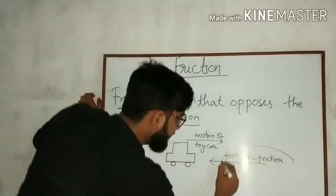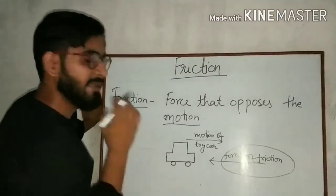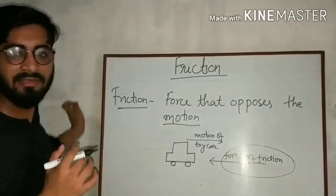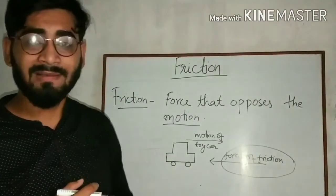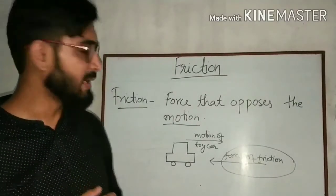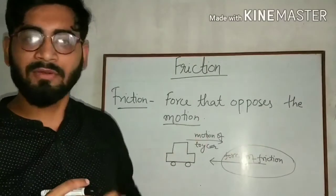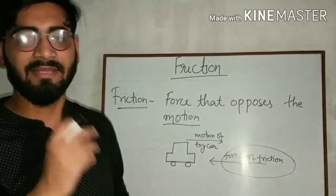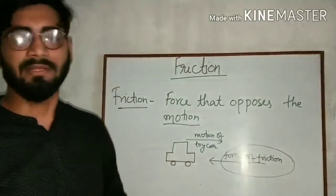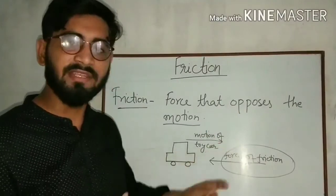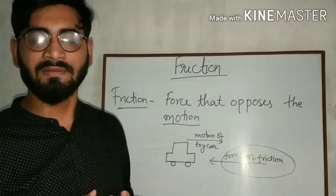When the force of friction is greater than the applied force, the car will stop. So, friction is that force which opposes the motion — force which opposes the motion. When you try to move the toy car, you apply force and it starts moving, but the force of friction acts against it and when it is big enough, the toy car will stop.